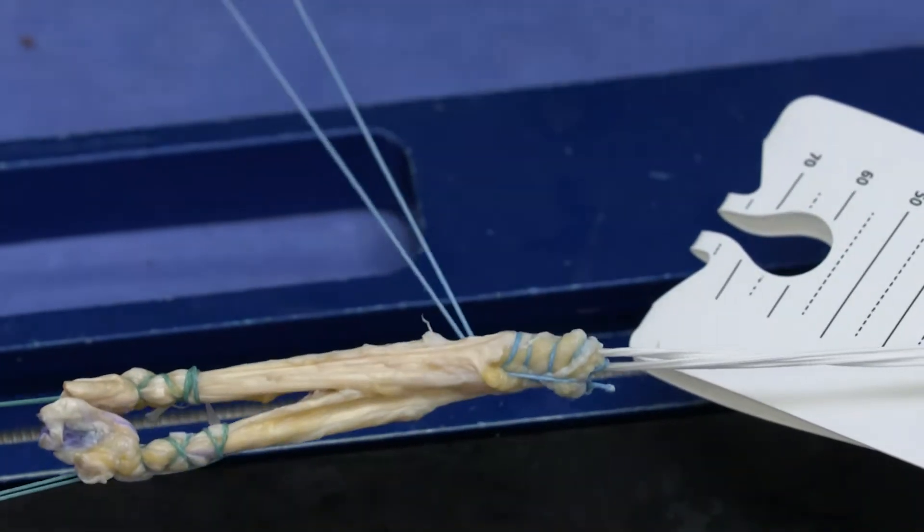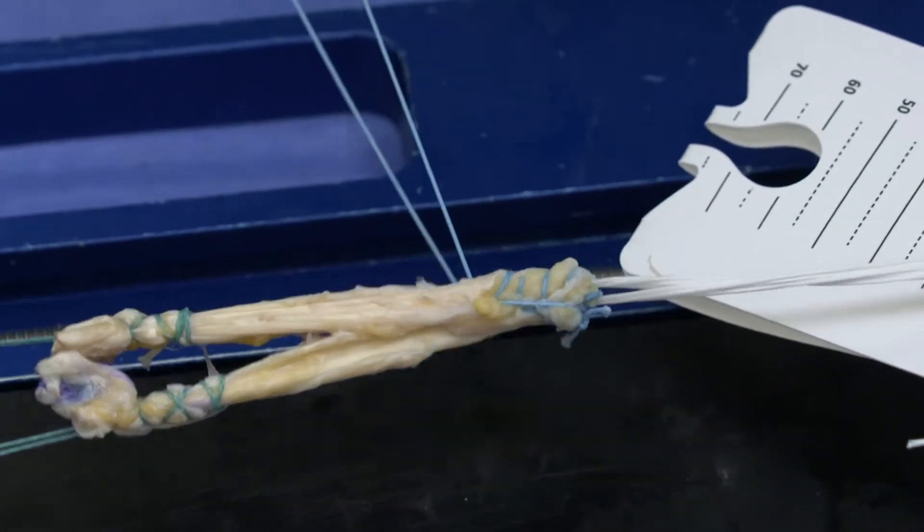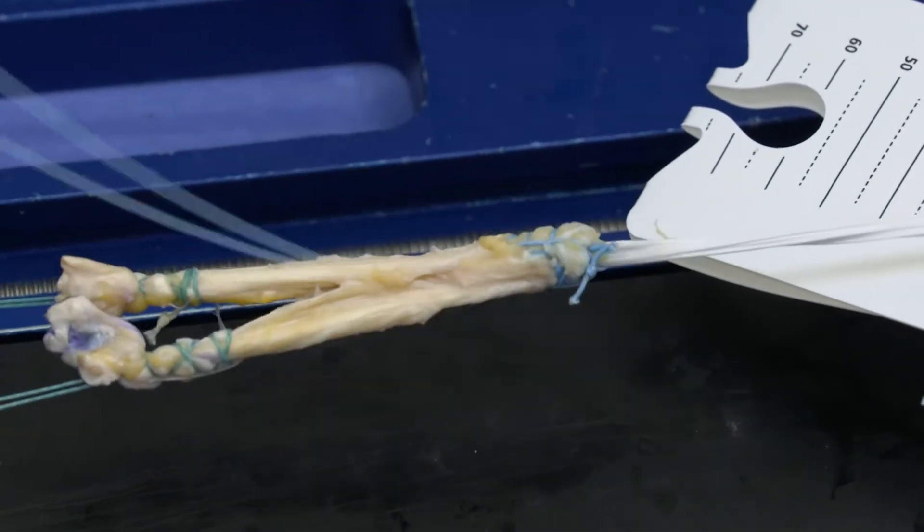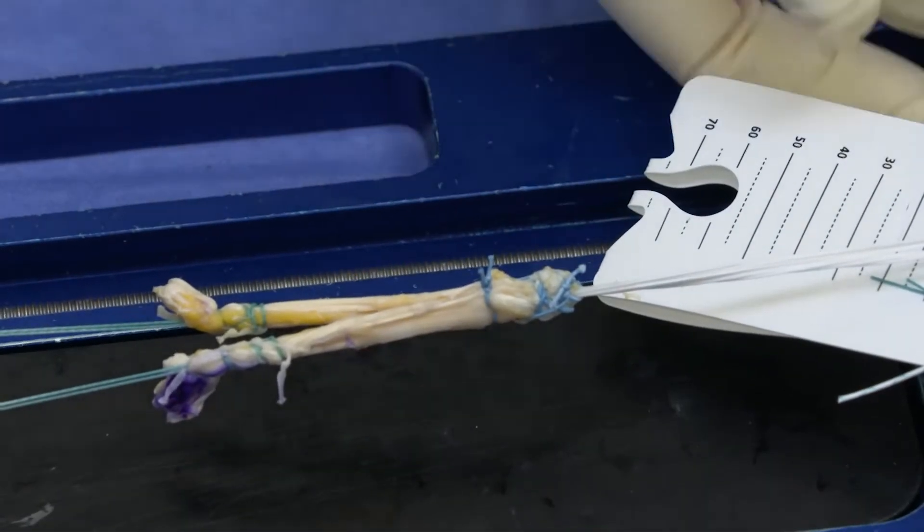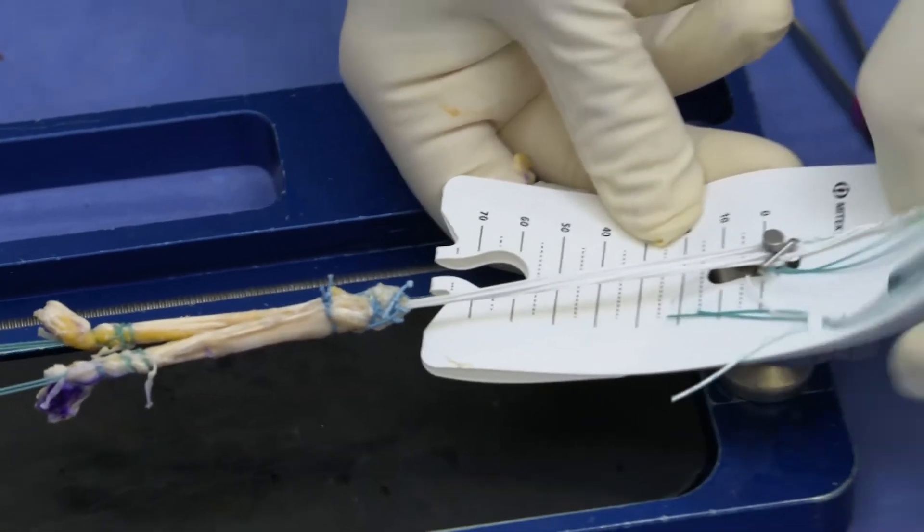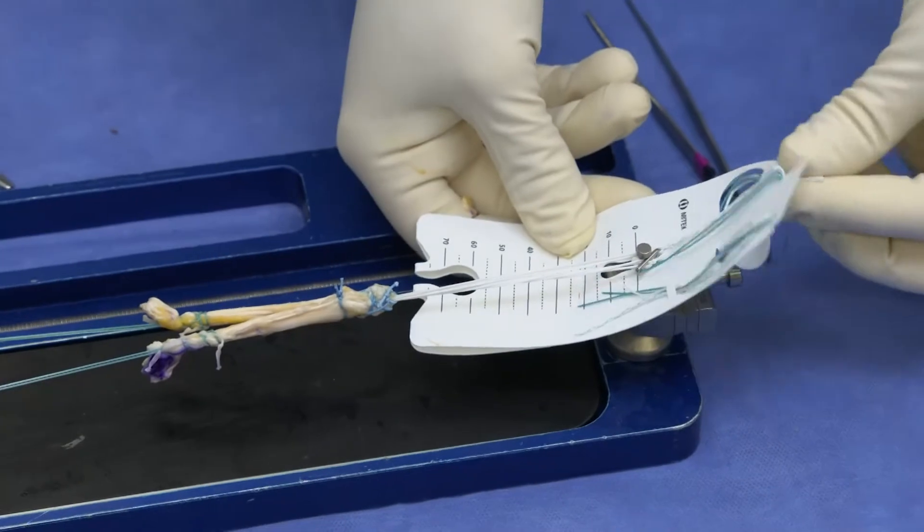That looks good. You can go ahead and cut the needle off the loop to tie. There we go, and we can check to make sure the loop's not tied in too tight to the rigid loop adjustable sutures by pulling on it. Yeah, so it slides nicely.